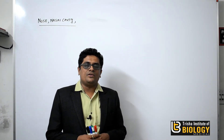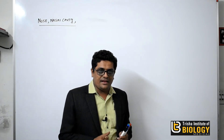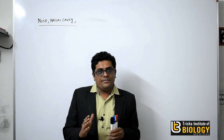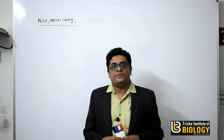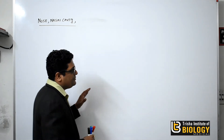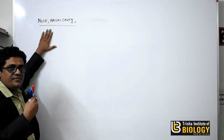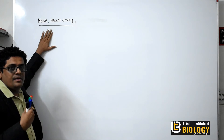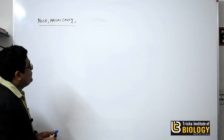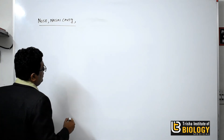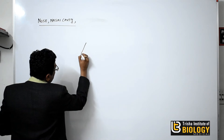Good morning friends. I'm Dr. Ashish Panchal from Trisha Institute of Biology. Different animals have different types of respiratory systems. Today we will talk about the human respiratory system, which starts with the nose, nasal cavity, then pharynx, larynx, trachea, bronchi, bronchioles, alveoli, and the lungs. So first, the nose.